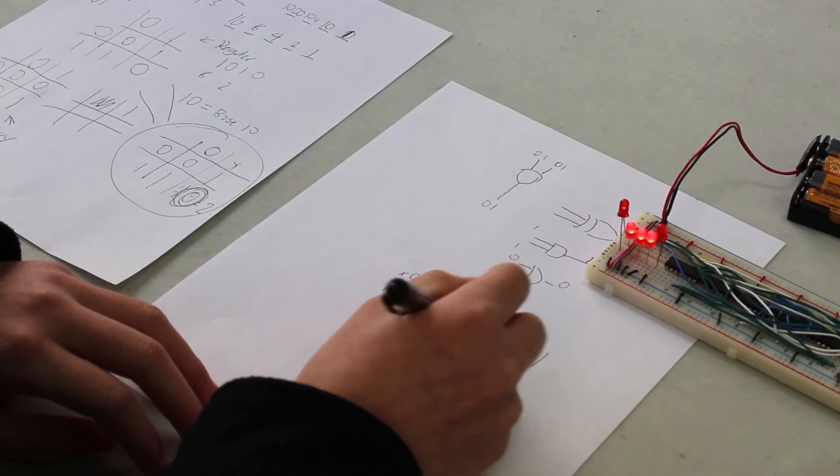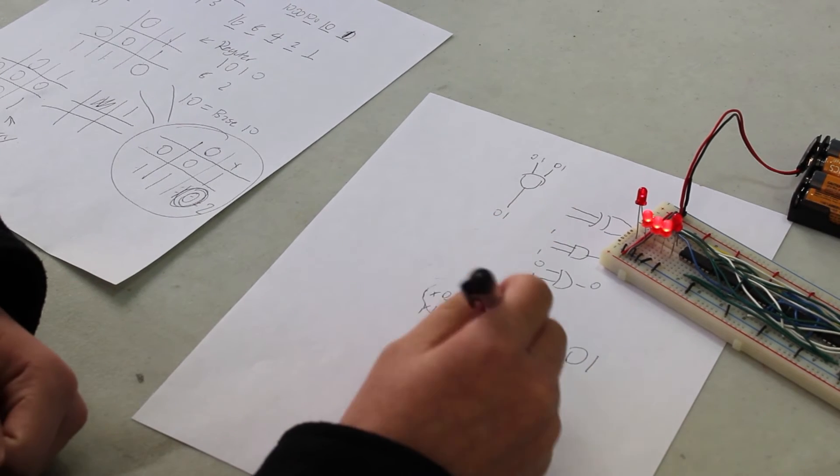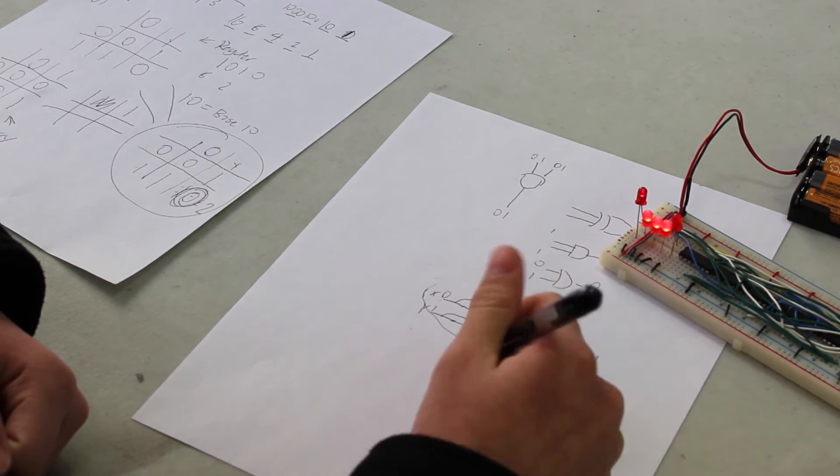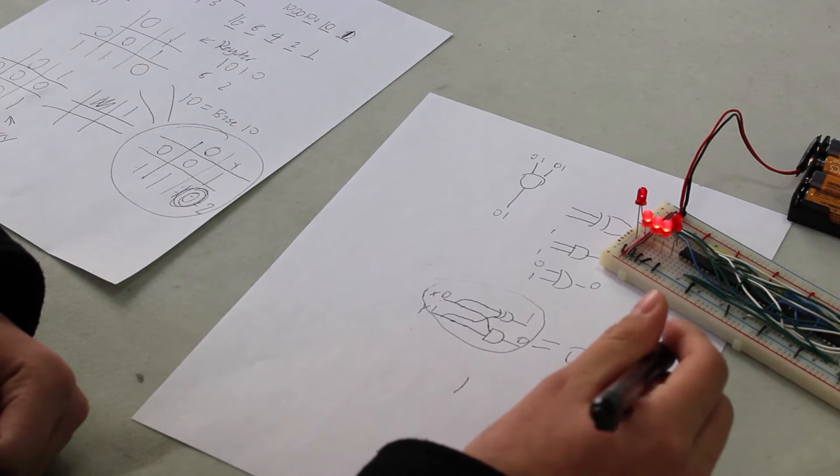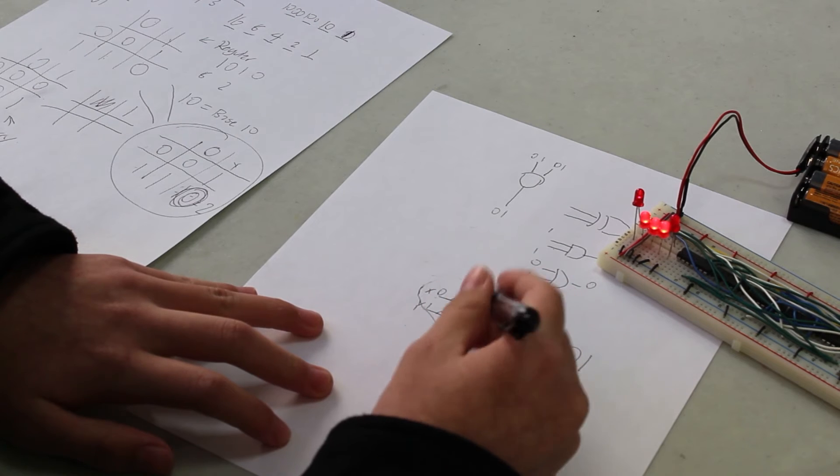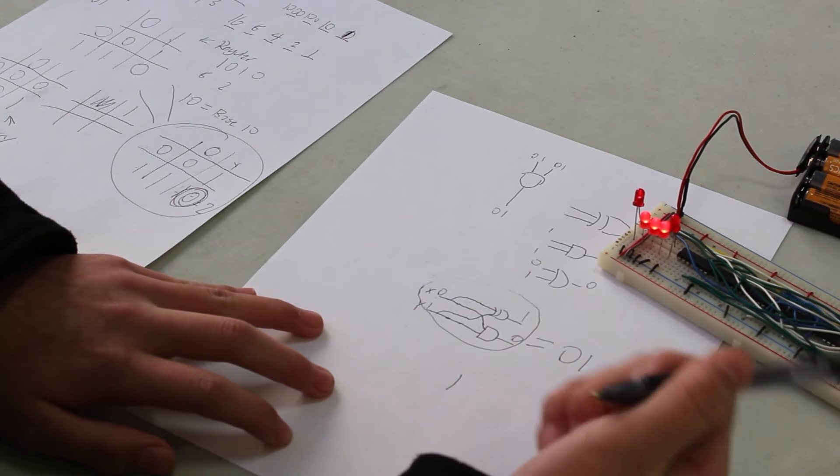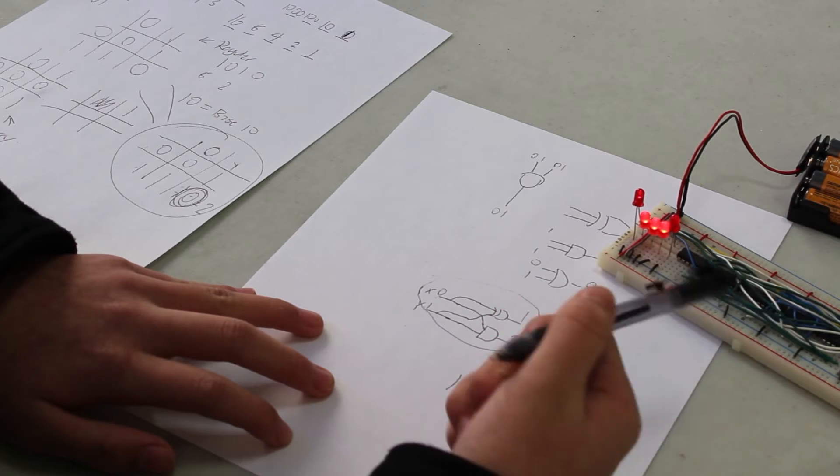Now, how does this work? This is what we call a half adder. This will work for one digit binary numbers. But if you notice, this has no input to calculate the carry from a previous half adder.